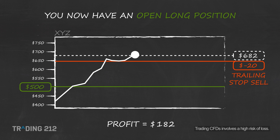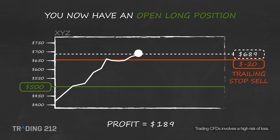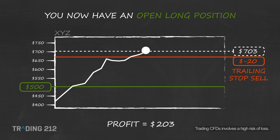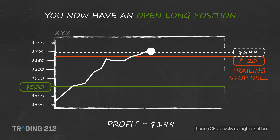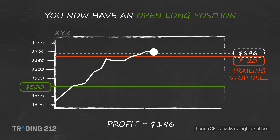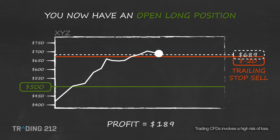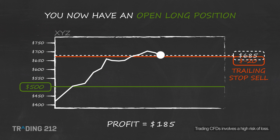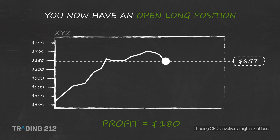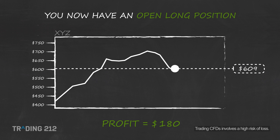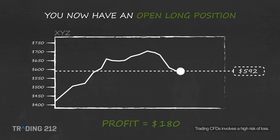As the price increases, moving in the direction of your order, the trailing stop increases and keeps its distance of $20 below the current price. Say at $700 the price changes direction and starts to fall. If the price falls and reaches the trailing stop limit at $680, a sell order will be executed at this point. This is how the trailing stop order allows you to keep accumulating profit until the market turns against you.